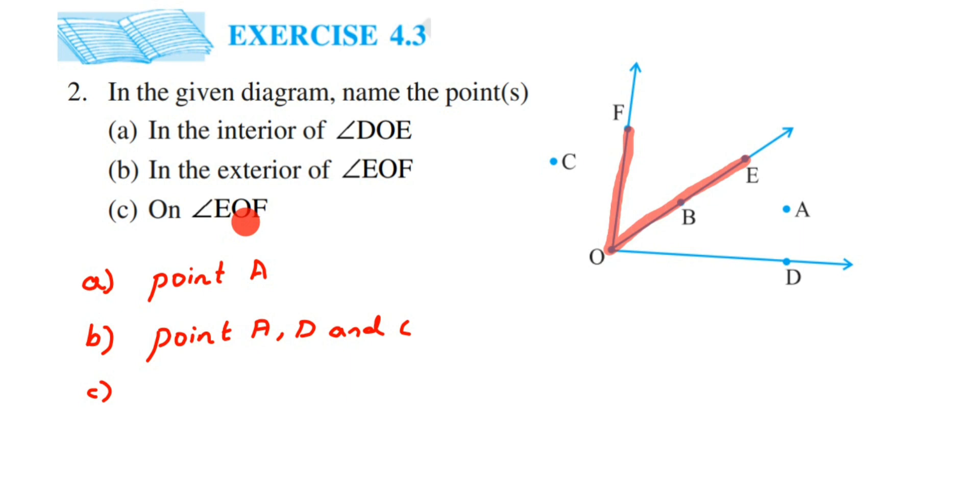On EOF, we have point B. Apart from point B, we're going to also write down the points—not angle, I'm sorry—the points that form the angle.